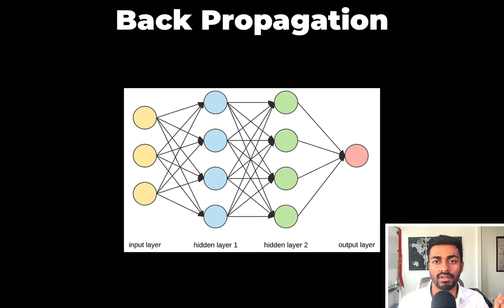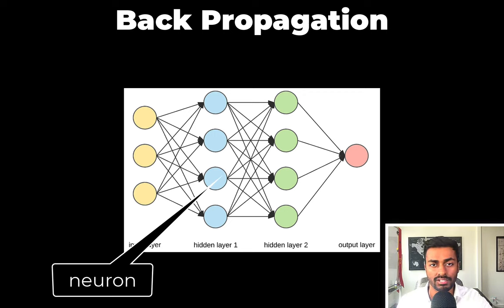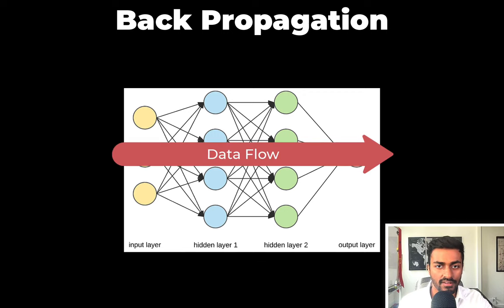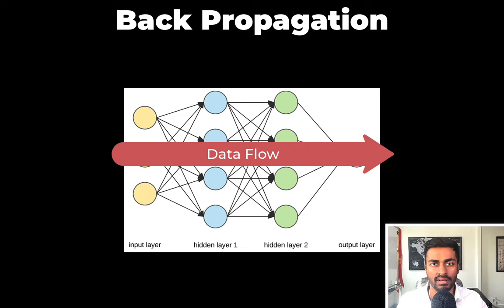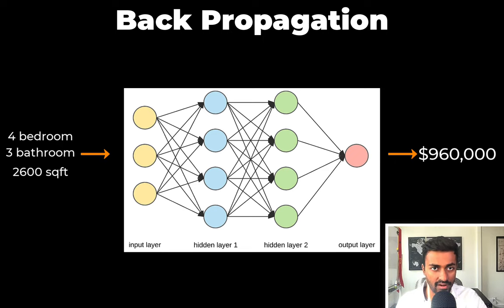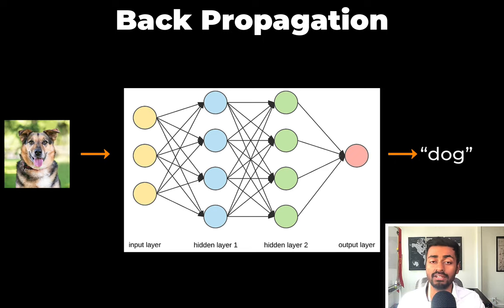This here is a feedforward neural network. Each circle is a neuron that has some inputs and outputs. Each edge connects neurons and has some weight given by a scalar value. Data flows from the left — the input layer — to the right, which is the output layer. This can be used to perform different tasks, for example, to determine the price of a house given information about it, or given an image, to determine if the image is a dog or not a dog.